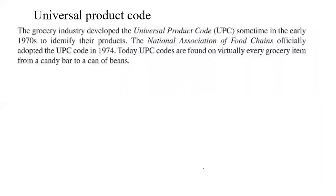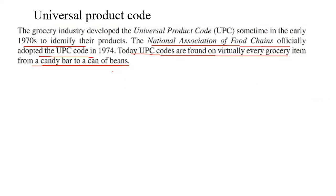The grocery industry developed the Universal Product Code in the early 1970s to identify their products. The National Association of Food Chains officially adopted the UPC code in 1974. Today, UPC codes are found on virtually every grocery item, from candy bars to cans of beans. The UPC code is a continuous code.